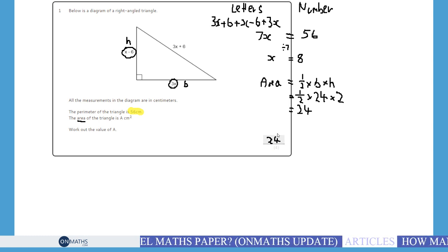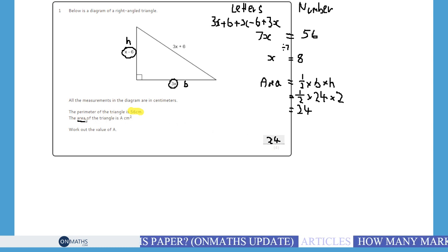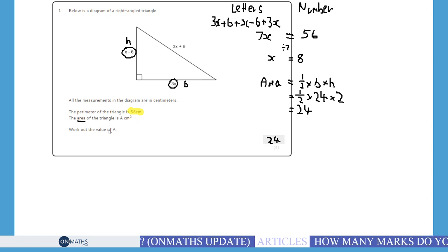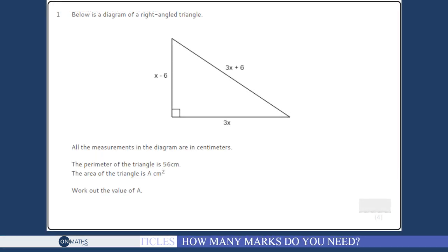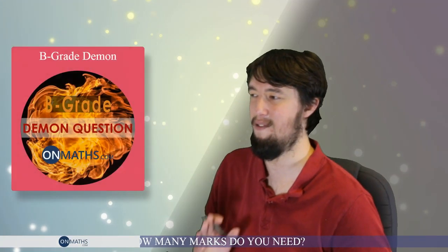Now, you might say, well, hang on. Surely, you should have cm squared there. Well, because of the way the question is written, it says the area of the triangle is a cm squared. Work out the value of a. So, actually, with this one, we don't need to put the units. However, if you did put the units in your exam question, then you wouldn't lose a mark. So, that is the first question and that's a C stroke D grade question. So, it's not too bad after all.